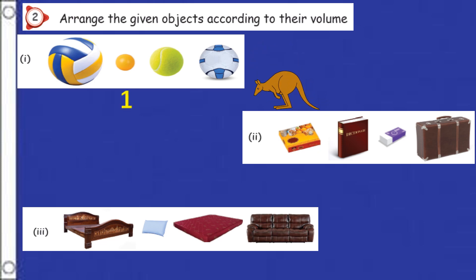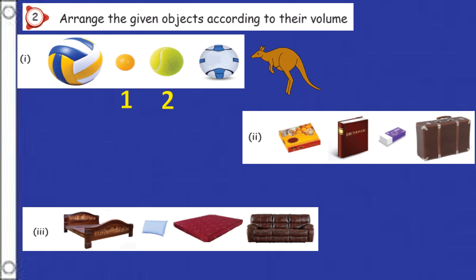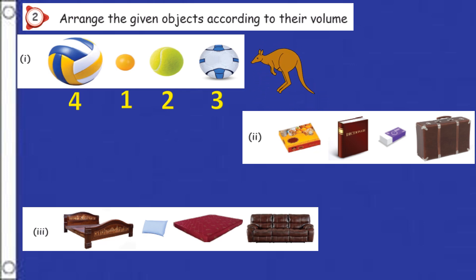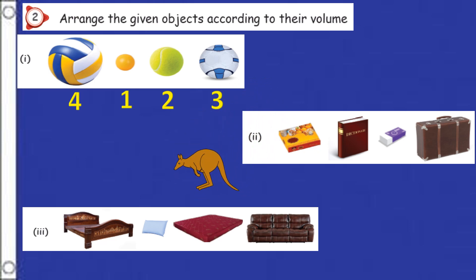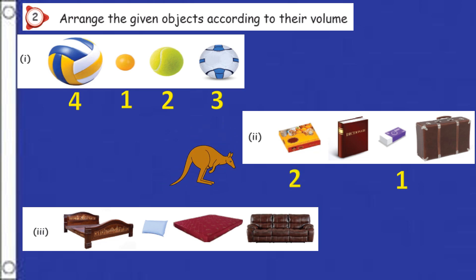The yellow ball — it is the small one, mark it as one. Then second one is the tennis ball. Then third is the model suitcase. Here also, the eraser is the smallest one, mark it as one. Second one is the sweet box, then third is the dictionary, and then the fourth one.